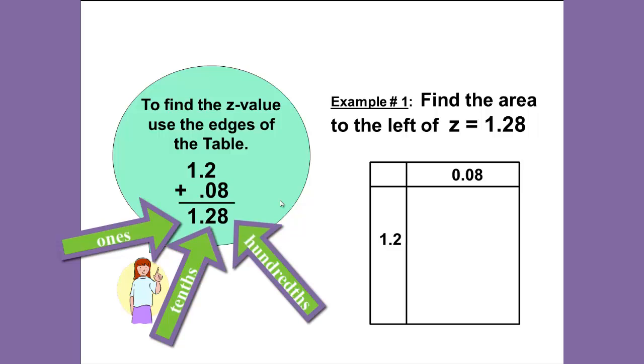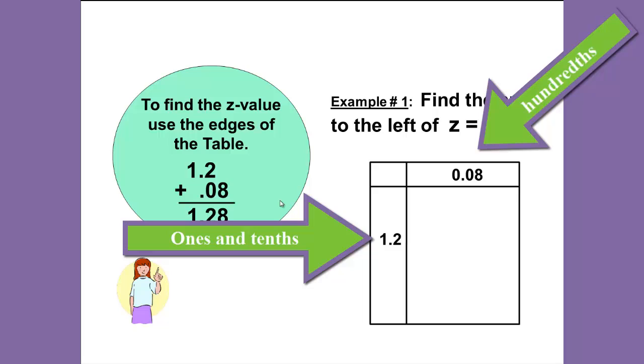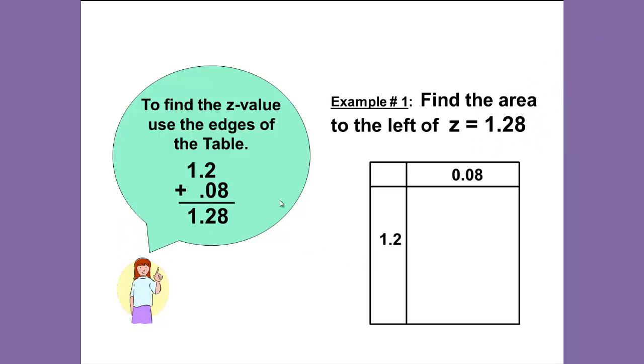So to look up 1.28, we want to find 1.2 along the left-hand side to indicate which row, and the 0.08 along the top to indicate which column. The zero here is because we already have the tenths indicated by the row. You can see how those two numbers add to give you the 1.28.